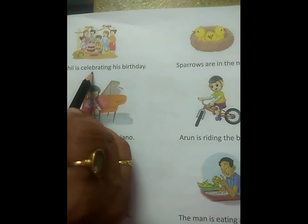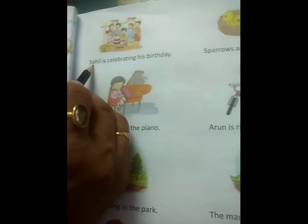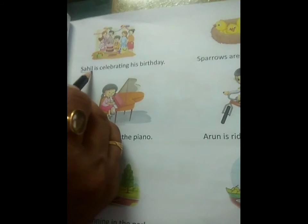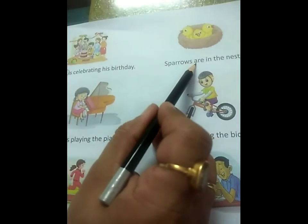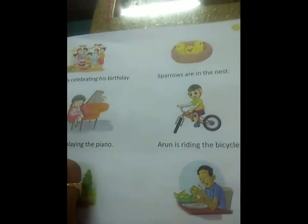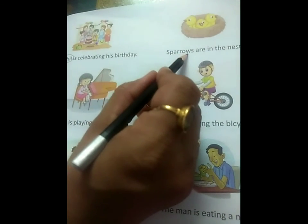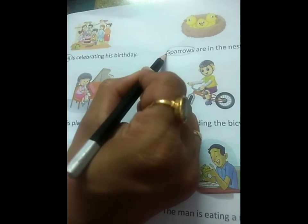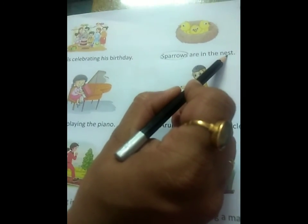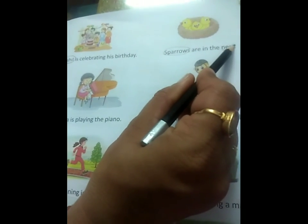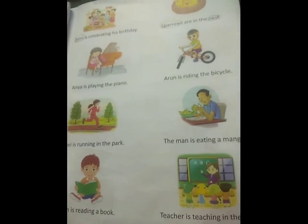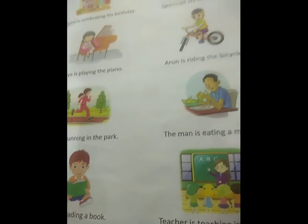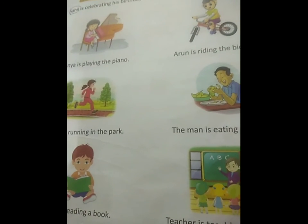Sahil is celebrating his birthday. Which is the noun? Yes — Sahil is a name of person, we will circle it. Next: sparrows are in the nest. Sparrow is the name of a bird, circle it. And the next word is nest — nest is the name of a thing, we also circle it.